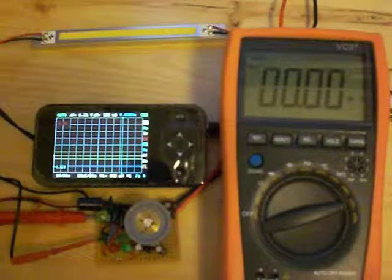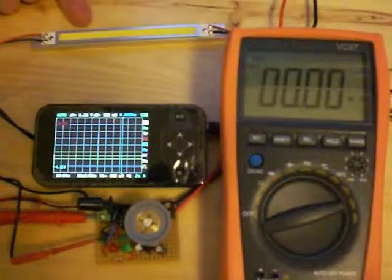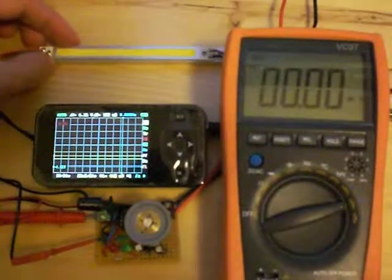This is my Pulse Width Modulation circuit for driving an LED strip that I got from Deal Extreme for about $10.